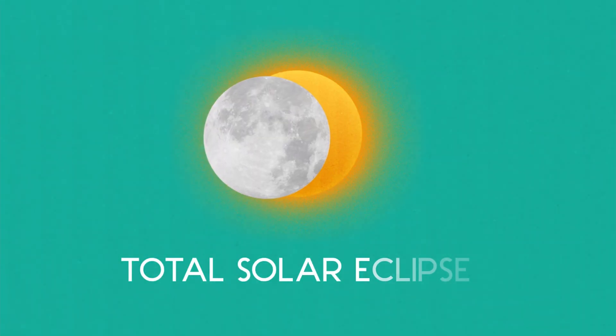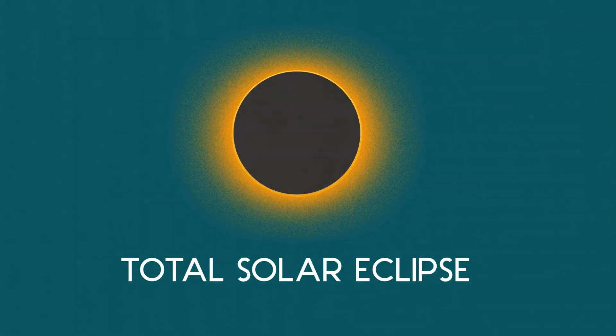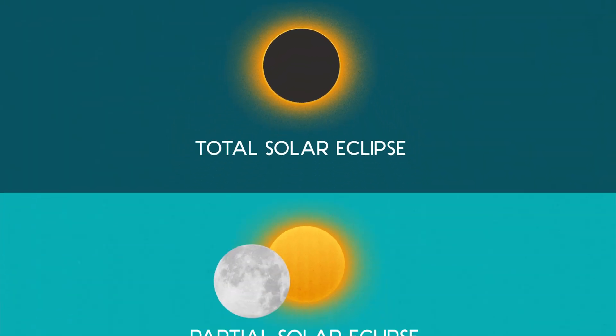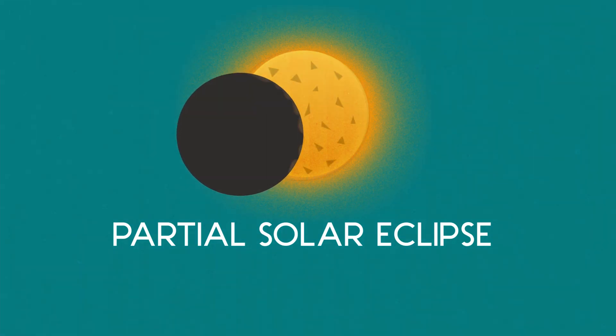Now, not all eclipses are the same. They can look different depending where on Earth you are and where the moon's shadow is. A total solar eclipse is when, from where you're watching, the moon completely covers the sun in the sky. And then there's also the partial solar eclipses when the moon passes over just a little bit of the sun. When this kind of eclipse happens, the sun looks like a little chunk is missing, like a cookie with a big bite taken out of it.